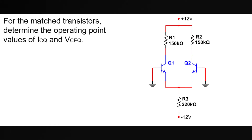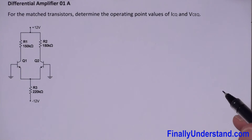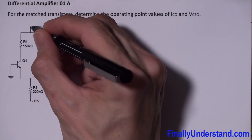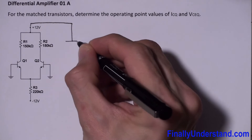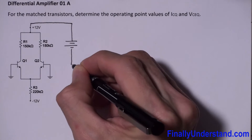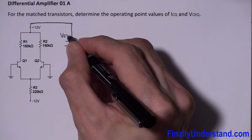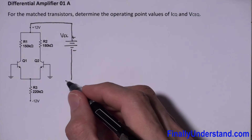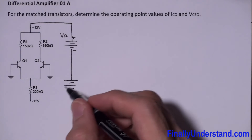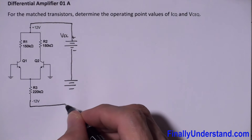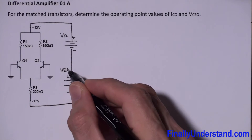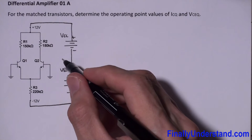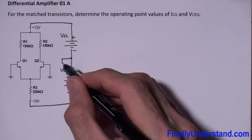Let's take a look at this example. This time we're supposed to find ICQ and VCEQ. The first thing I'm going to do is draw the voltage sources to make this analysis a little bit simpler. This is my VCC — positive terminal on top, negative on bottom — and this is my VEE — positive terminal, negative on bottom. The connection between these two voltage sources is my ground.